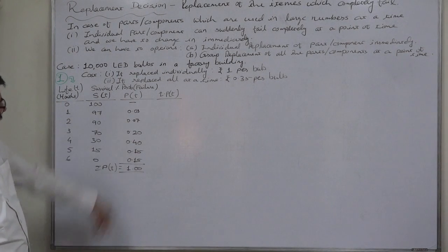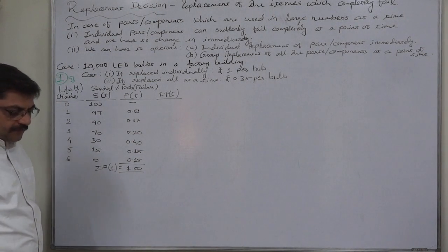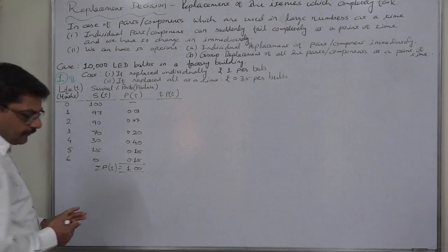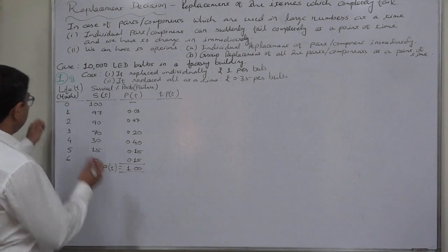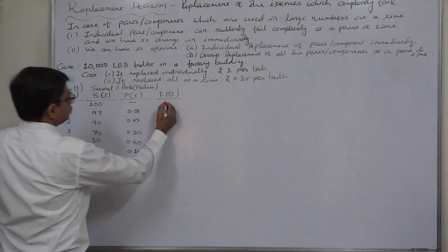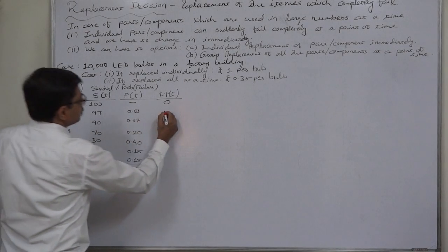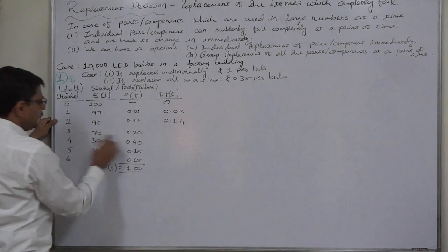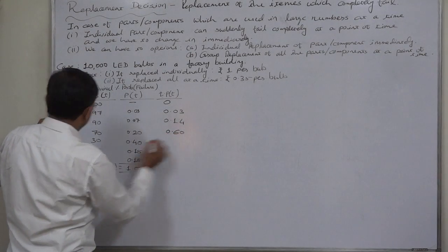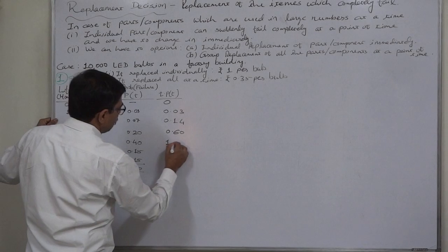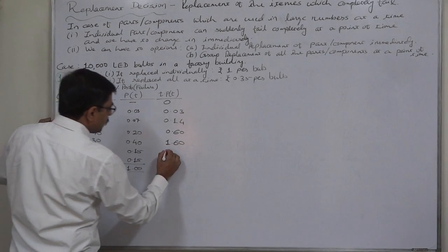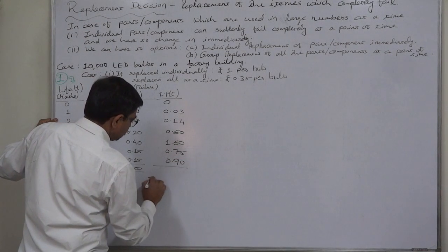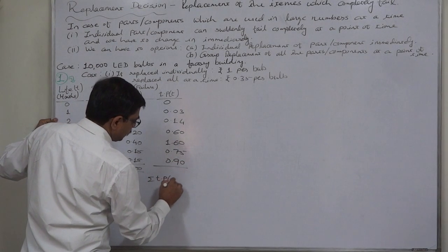Probability of failure is given in this column. First of all, we need to calculate the expected life, and that will be t into p of t. 1 into 0.03 is 0.03, 2 into 0.07 is 0.14, 3 into 0.2 is 0.6, 4 into 0.4 is 1.6, 5 into 0.15 is 0.75, 6 into 0.15 is 0.90. Sigma t into p of t comes to 4.02.